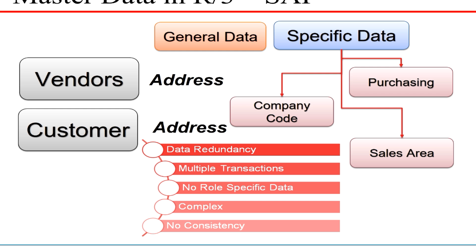The problems with this approach were data redundancy. For example, if you have a vendor who is also a customer, you have to create them twice with the same address — once as a vendor and once as a customer. There were also a lot of transactions: to create a vendor you use XK01, XK02, XK03 for create, change, and display; at the company code level you use FK01, FK02, FK03; and at the purchasing level you use MK01, MK02, MK03. For customers you use XD01, FD01, and so on.